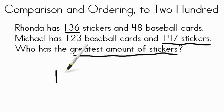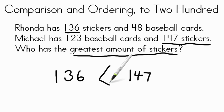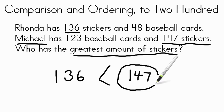So Rhonda has 136, and Michael has 147. So what symbol is going to go between that? That's right. 136 is less than 147. So the person that has the greatest amount of stickers? Michael, with a number of 147.